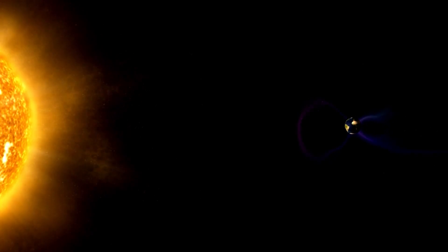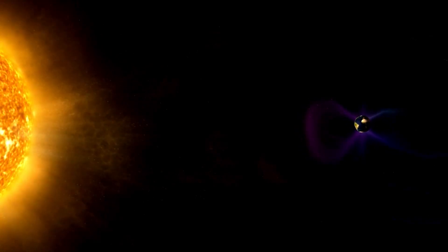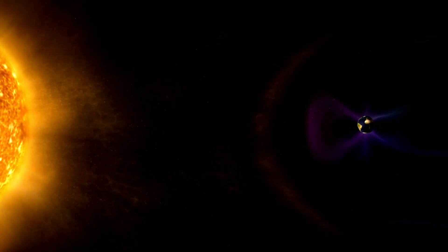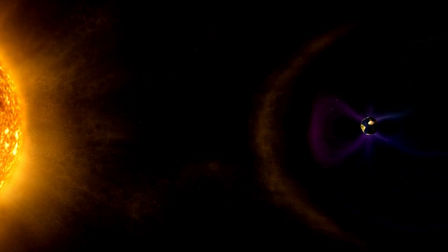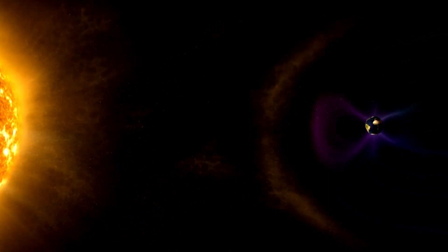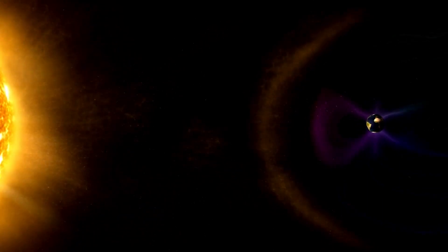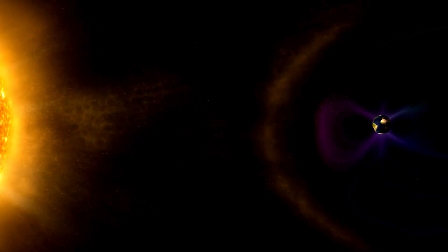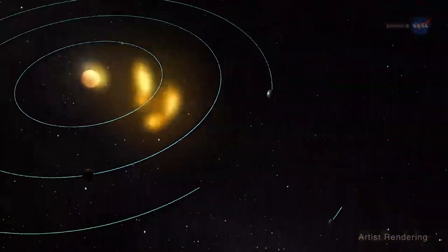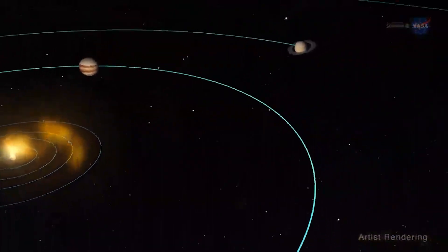In conclusion, the foreshock is a fascinating region formed by the interaction between the solar wind and the Earth's magnetic field. It's a reminder of the constant bombardment our planet faces and the delicate balance that keeps us protected. But the foreshock is also a reminder of the beauty and power of nature.